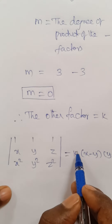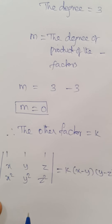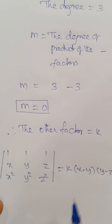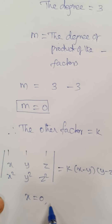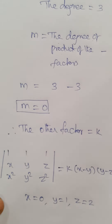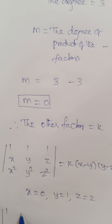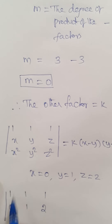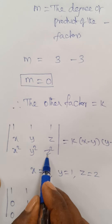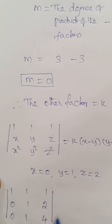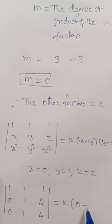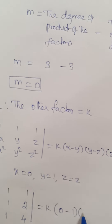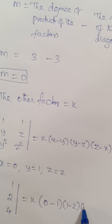Now I am going to find the value of k by substituting specific values. I put x equal to 0, y equal to 1, z equal to 2. On the left-hand side, the matrix becomes rows [1,1,1], [0,1,2], [0,1,4]. On the right-hand side: k times (0−1)(1−2)(2−0), which equals k times (−1)(−1)(2).